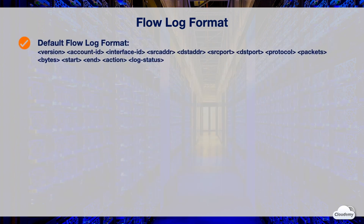By default, the log line format for a flow log record is a space-separated string that has a set of fields in a fixed order: version, account ID, interface ID, source address, destination address, source port, destination port, protocol, packets, bytes, start, end, action, and log status.